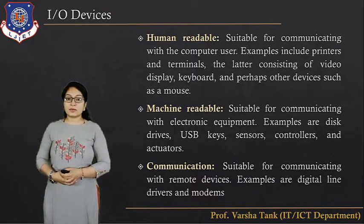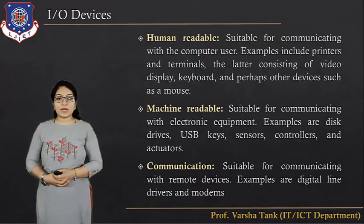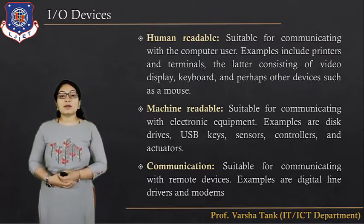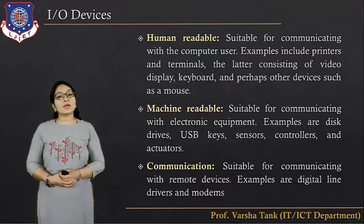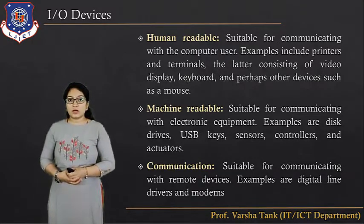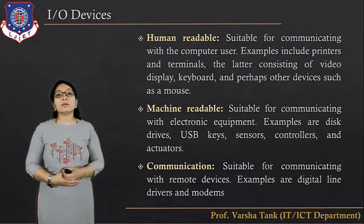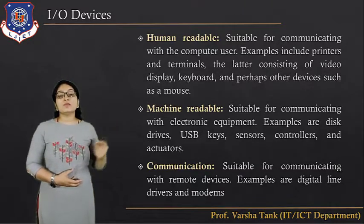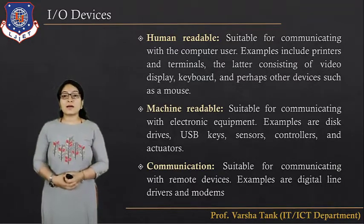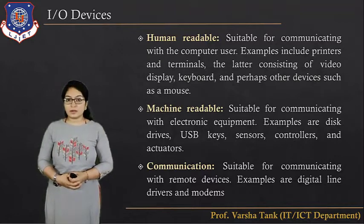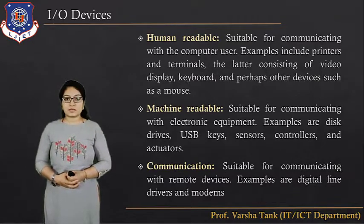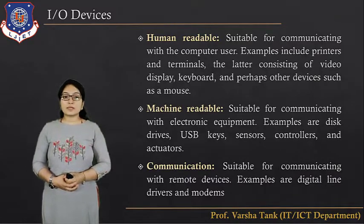Which are the different types of the I/O devices? The first type is the human-readable device. The device that is capable of interacting with the human is known as the human-readable device. It is suitable for communicating with the computer user. Examples include a printer, terminals consisting of video displays and keyboards, and perhaps other devices such as a mouse. Using these devices, a human can interact with the computer system.